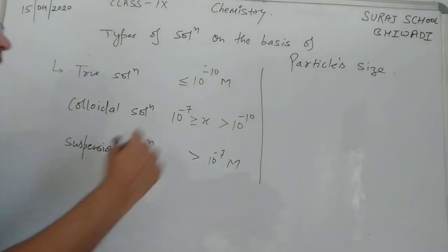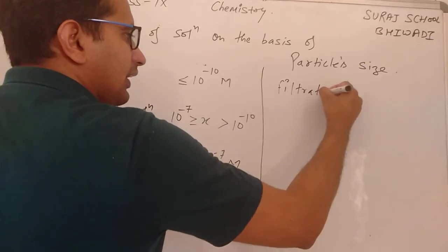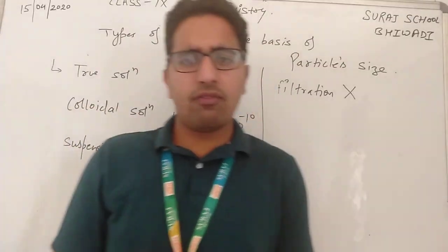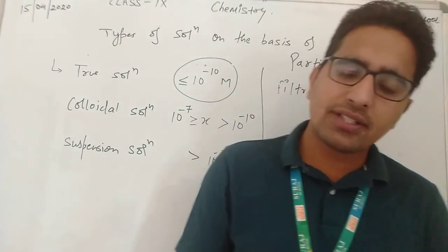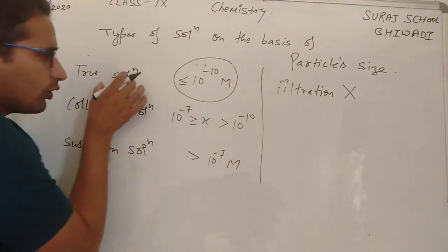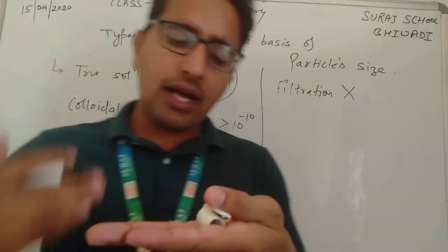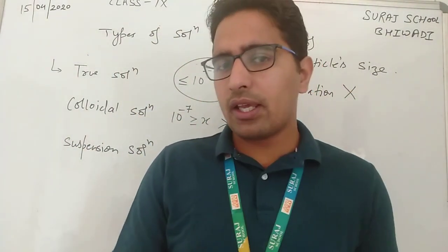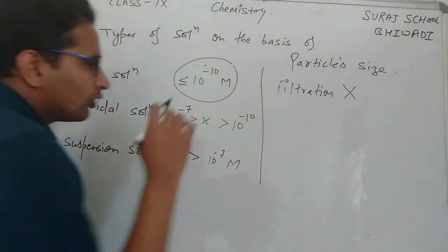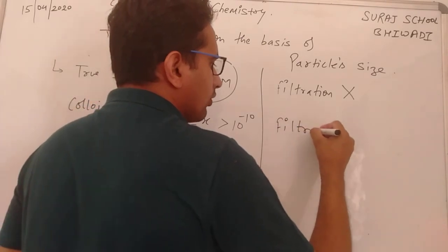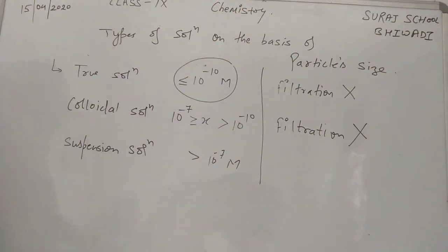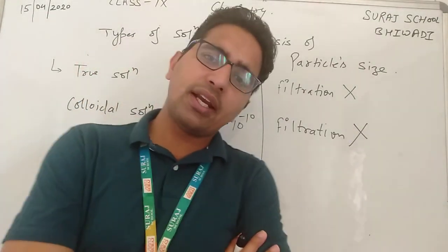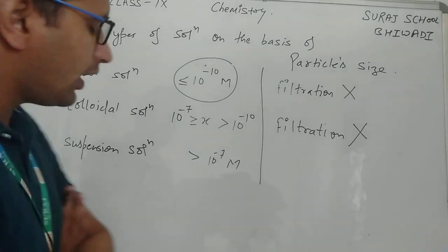True solution को filter paper से filtrate नहीं किया जा सकता, क्योंकि particle size इतना ज़्यादा छोटा है कि filter paper के pores उसे रोक नहीं सकते। तो true solution का filtration filter paper से नहीं हो सकता — solute और solvent को अलग नहीं किया जा सकता। इसी तरह colloidal solution को भी filter paper से filtrate नहीं किया जा सकता, क्योंकि filter paper का pore size इतना छोटा नहीं होता।